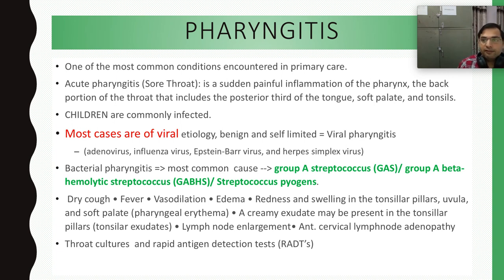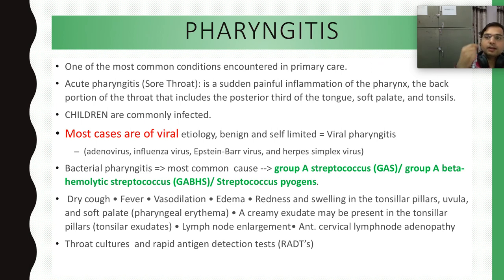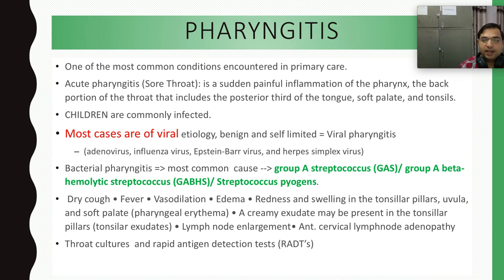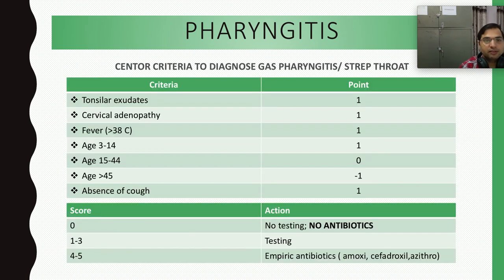Another feature is lymph node enlargement, especially the anterior cervical lymph nodes at the neck region, which are enlarged. For investigations, throat cultures are done — we take a swab from the tonsillar region and send it for culture. There are also rapid antigen detection tests (RADT) where we can identify the bacteria within a few minutes using the antigen.